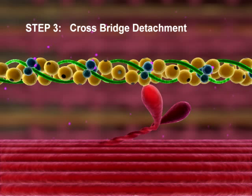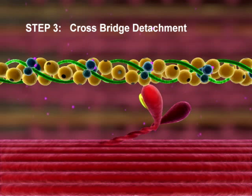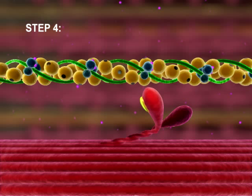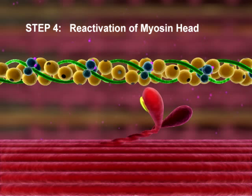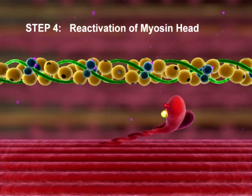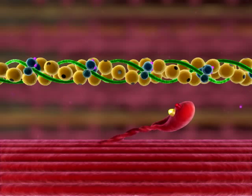Step 3: Crossbridge Detachment. When another ATP binds to the myosin head, the link between the myosin head and actin weakens, and the myosin head detaches. Step 4: Reactivation of the myosin head. ATP is hydrolyzed to ADP and inorganic phosphate, and the energy released during hydrolysis reactivates the myosin head, returning it to the cocked position.